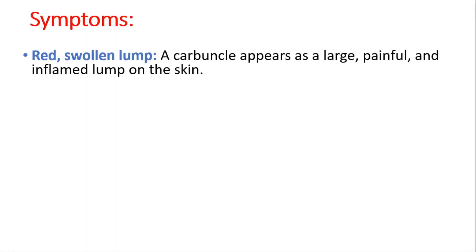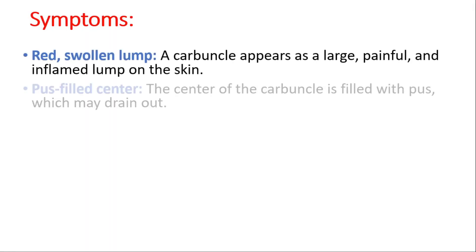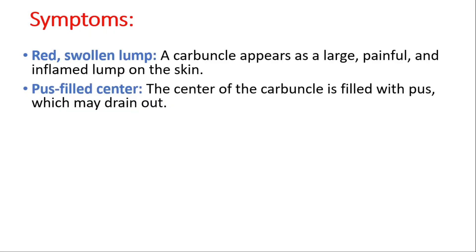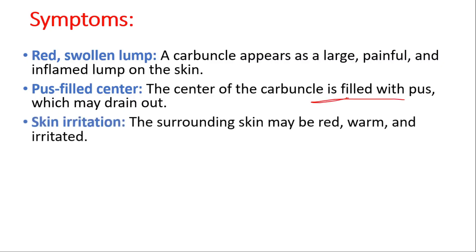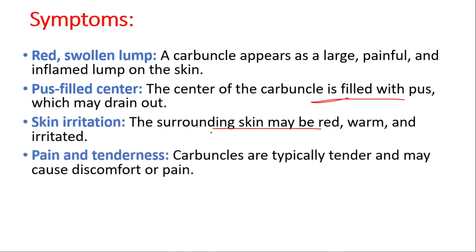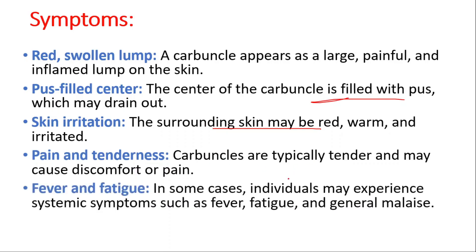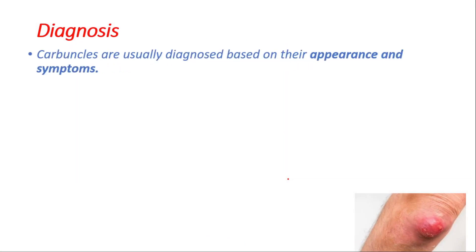The symptoms we can see include a red swollen lump — it appears as a large painful inflamed lump on the skin. The center of the carbuncle is filled with pus, which may drain out. The surrounding skin may be red, warm, and irritated. Pain and tenderness can also be seen, as well as fever and fatigue.